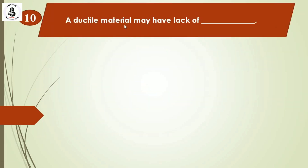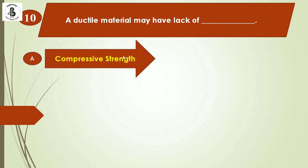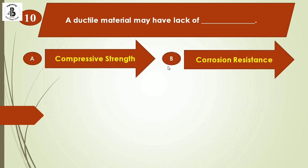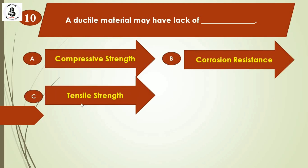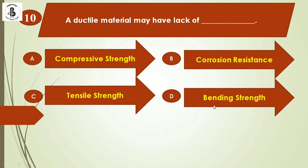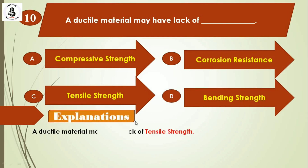Next question: A ductile material may have lack of — option A: compressive strength; option B: corrosion resistance; option C: tensile strength; option D: bending strength. A ductile material may have lack of tensile strength. The right answer is option C.